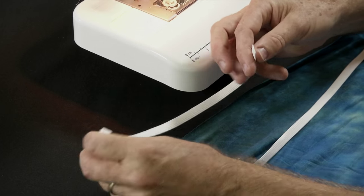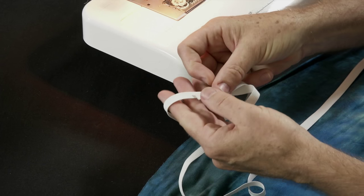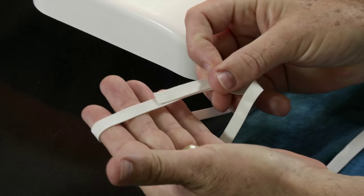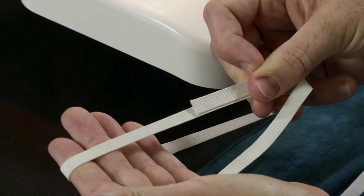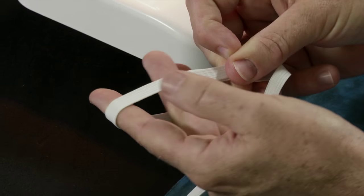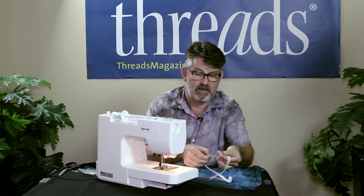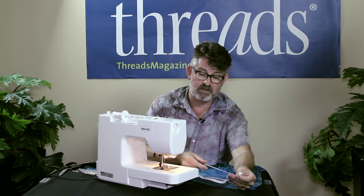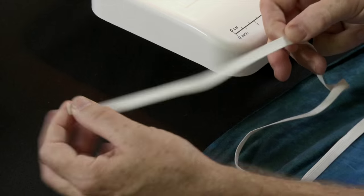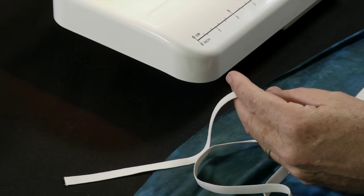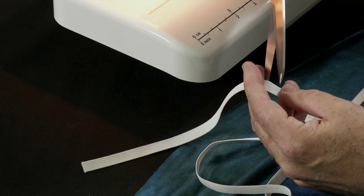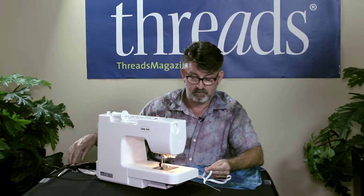Then you're going to loop the elastic around your waist so that it's snug but not too tight, and then you're going to mark where the end of the elastic comes to the other piece. And you're going to go back a couple of inches, about two, and snip that elastic off. Now you have a piece of elastic that is custom made to your waistline.